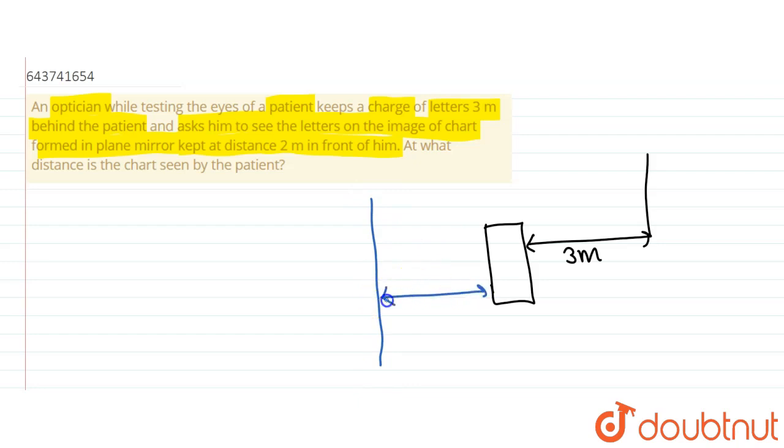...two meters from the person. This is a mirror. Now what is he told? At what distance is the chart seen by the patient? So what would be the chart's image? Where would it be?